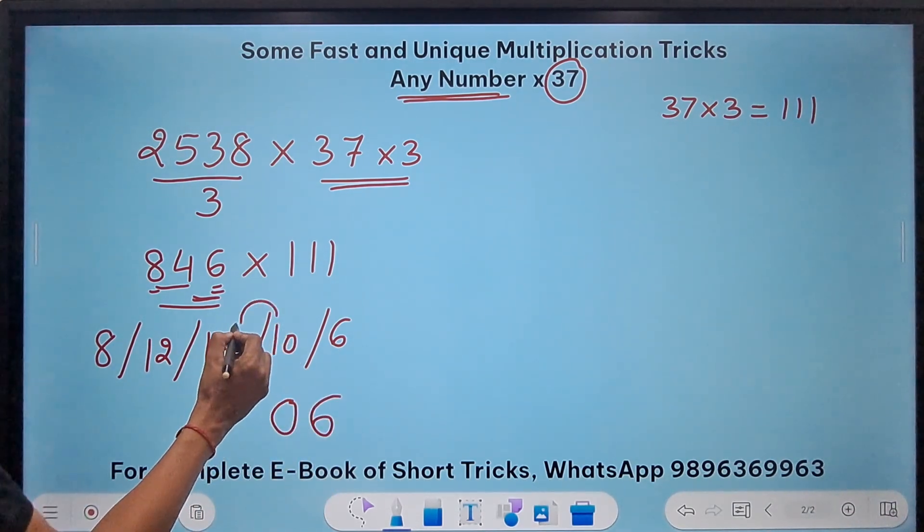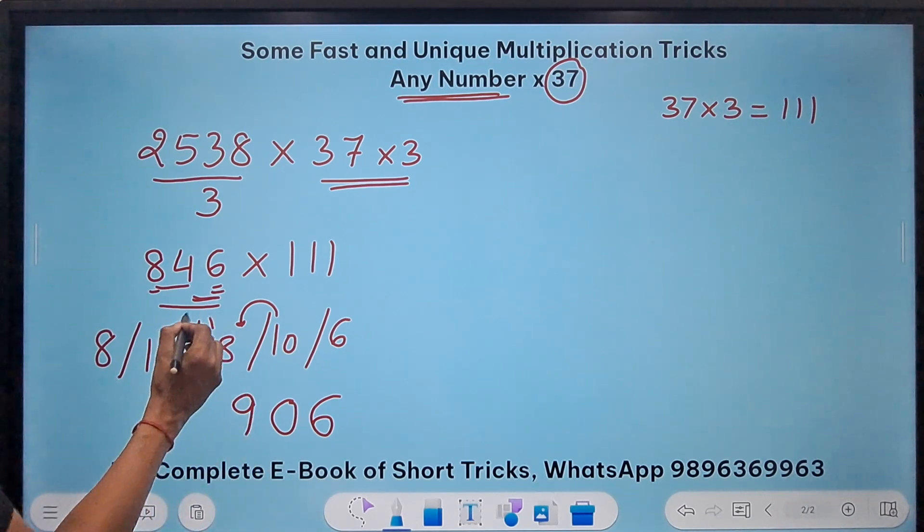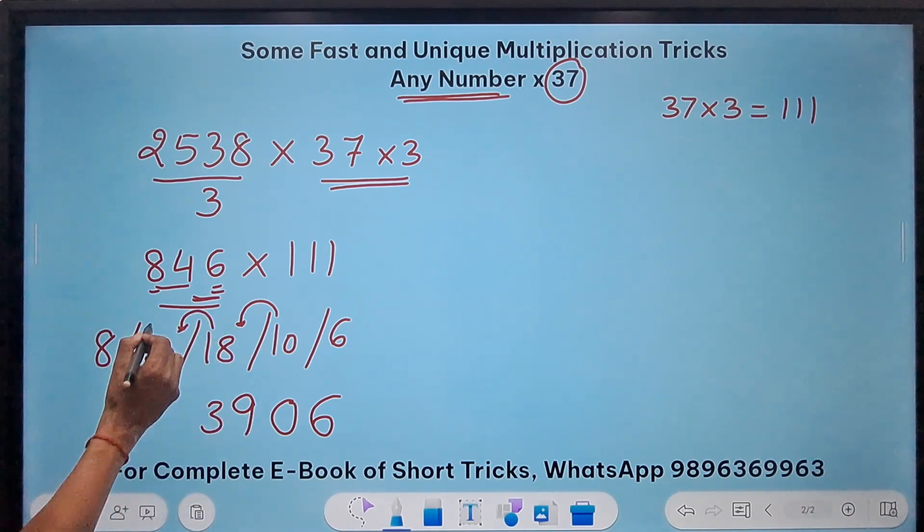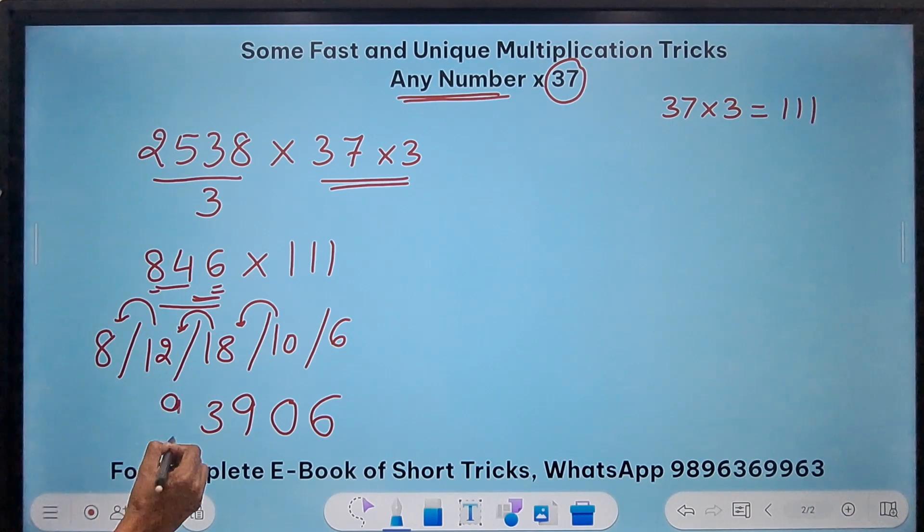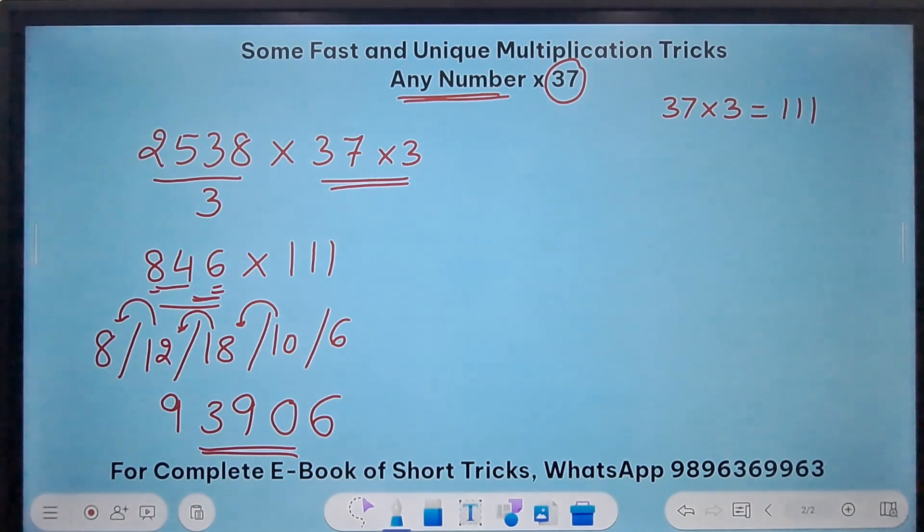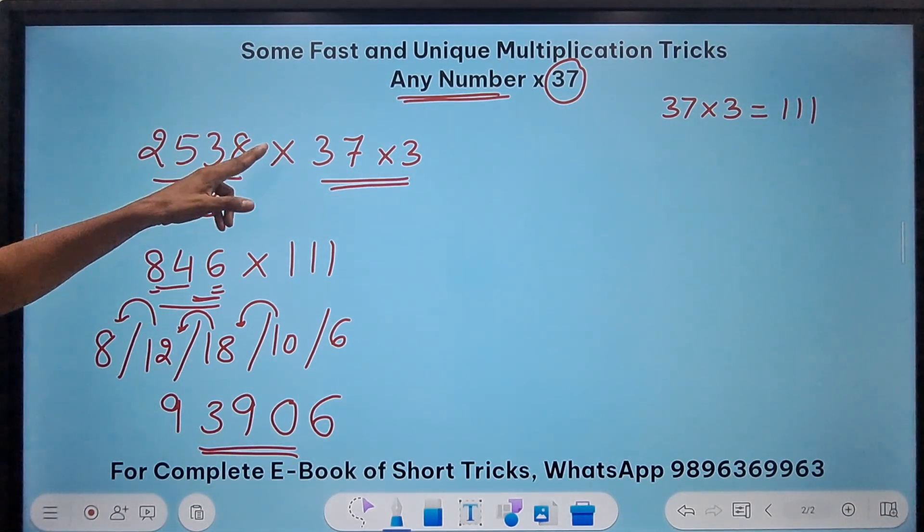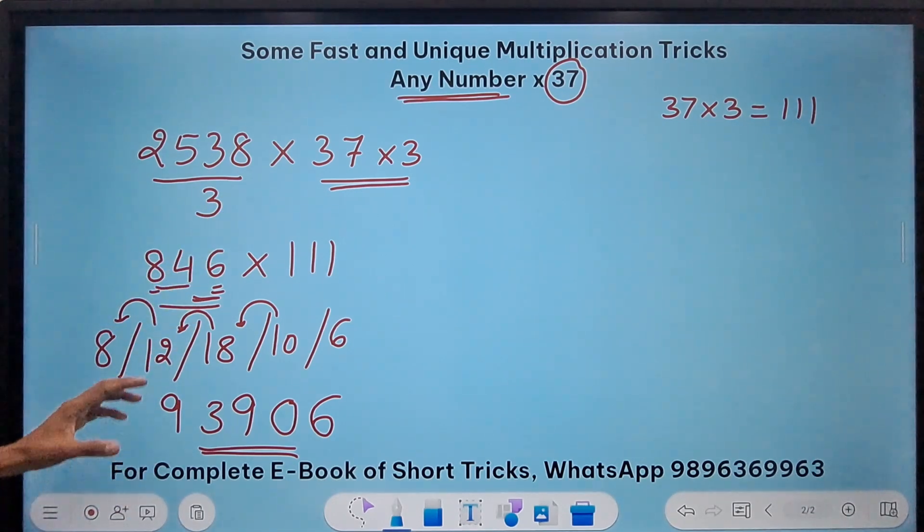And start writing from the unit place 6 then we have a 0, 1 carried so 19 means 9, 1 carried 13 means 3 and a 1 carried 9 and now pick up the calculators and check your answer 2538 times 37 is 93906 and you are going to be surprised by the accuracy of the result.